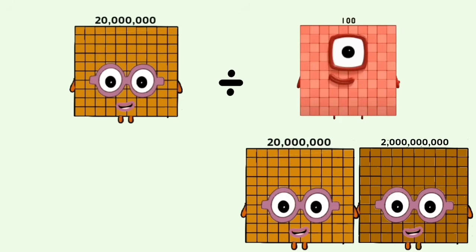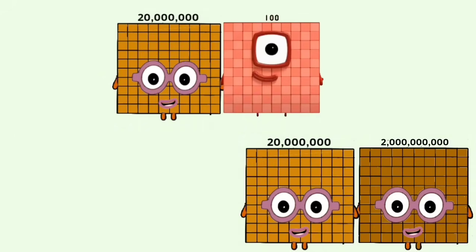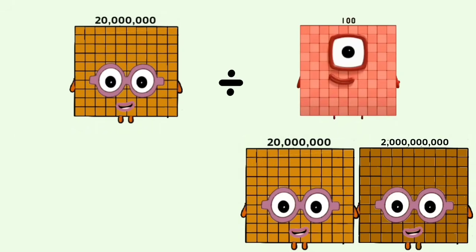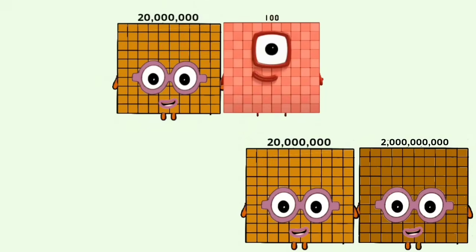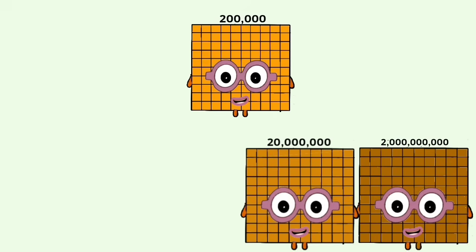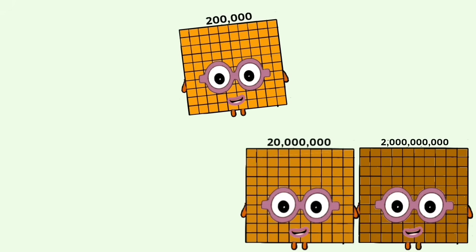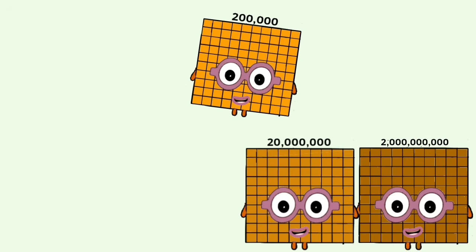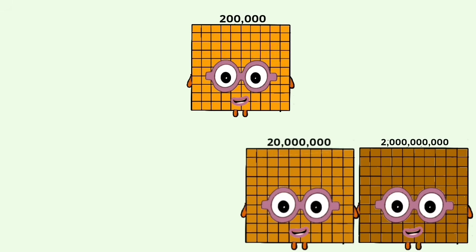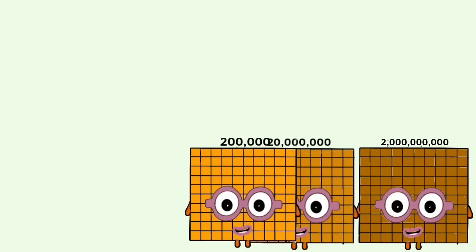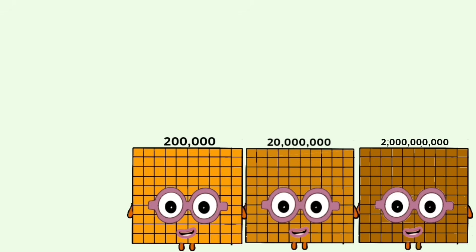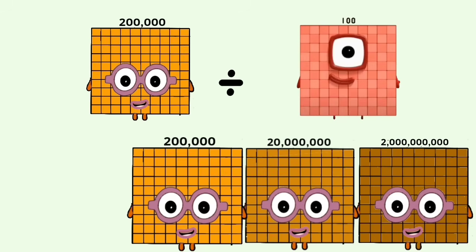20 million divided by 100 equals 200,000. 200,000 divided by 100...